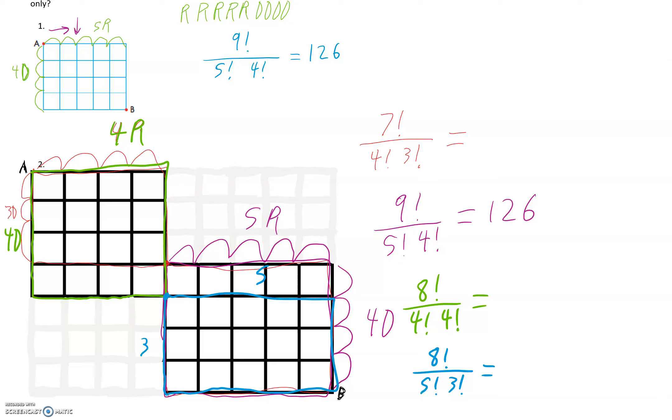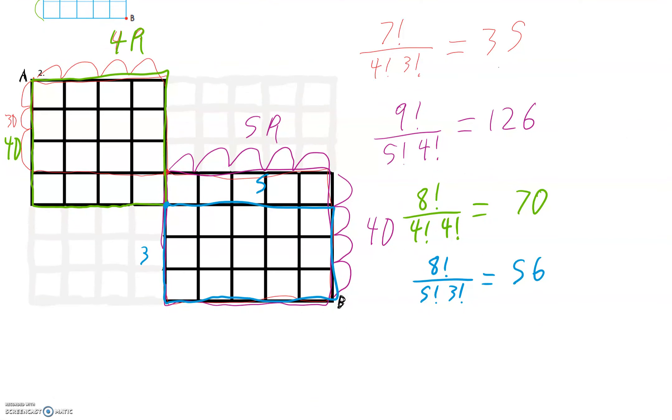So we have to plug all of these into our calculator so that we can see what we get. So 7 factorial over 4 factorial times 3 factorial, so the first one is 35. Then we have 126. Then we have, this one we have 70. And then in blue we have, that one has to be 5, that one has to be 3, and 56. Okay, and now what we need to do is just add all of those four together. So 56 plus 35 plus 70 plus 126.